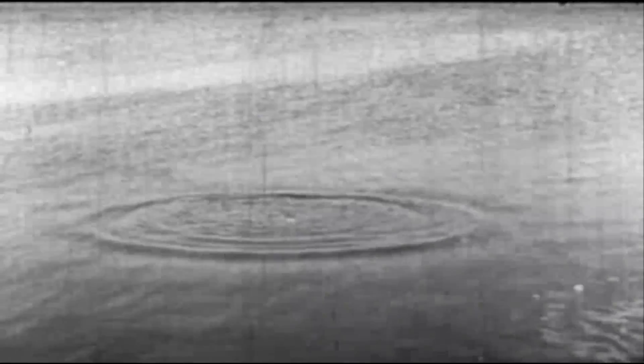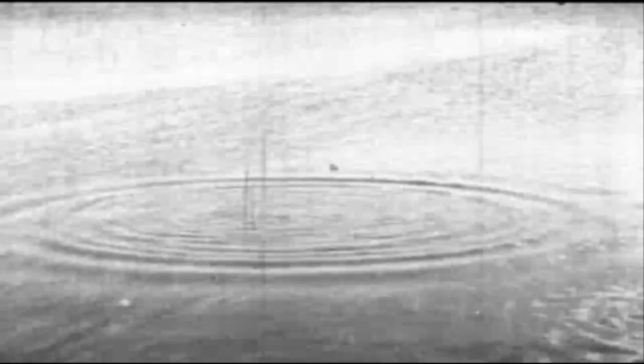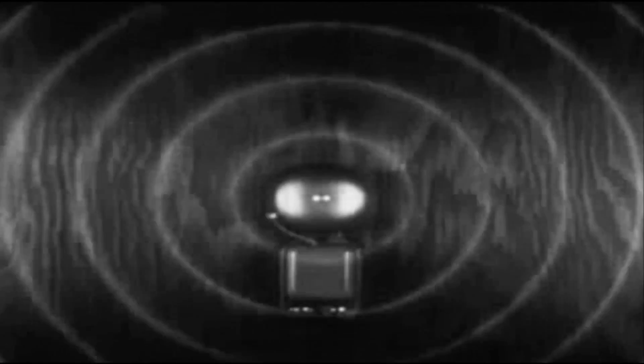We all know that if a pebble is dropped into water, ring-like ripples spread in all directions over the surface. A doorbell ringing sends out similar but invisible wave-like impulses which travel through the air with a speed of about 1,100 feet per second. Sounds of every kind are transmitted to our ears by just such waves.